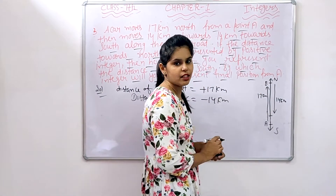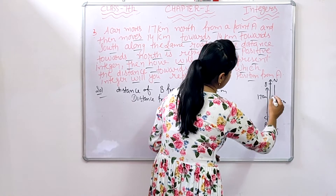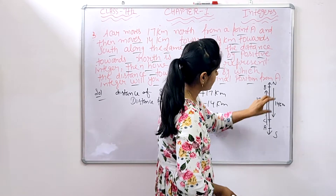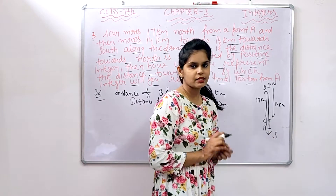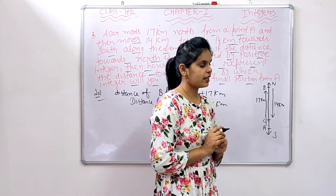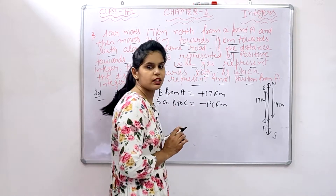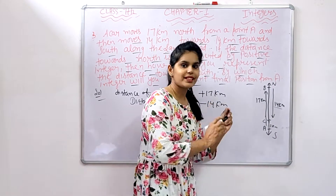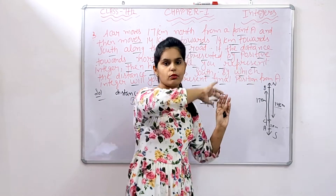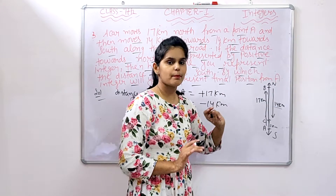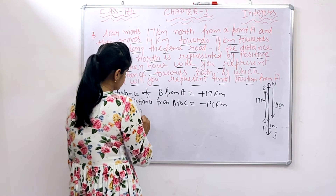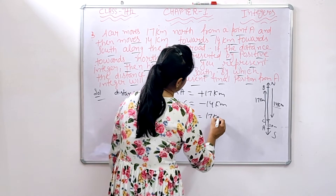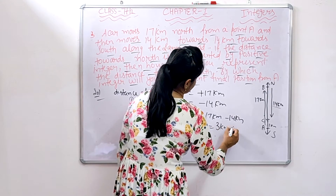The distance of B from A equals plus 17 km. The distance from B to C equals minus 14 km, shown as negative. So to find the final position of C from A: 17 km minus 14 km equals 3 km. The distance of C from A equals 3 km, which is positive, meaning 3 km towards the north.